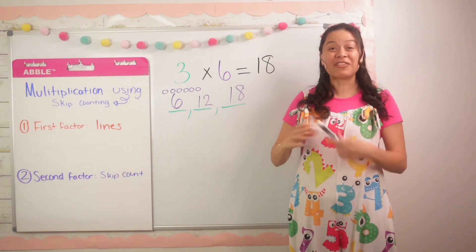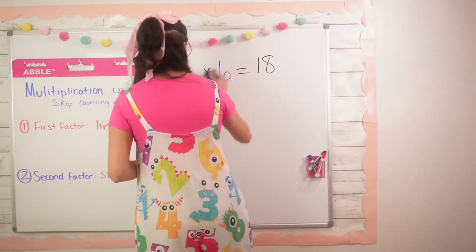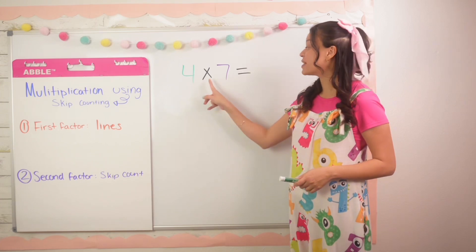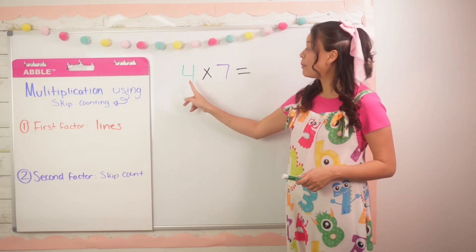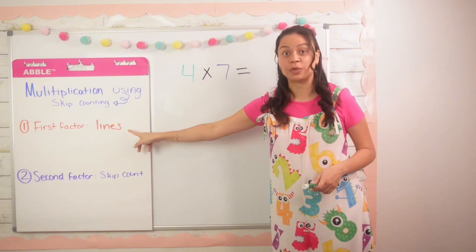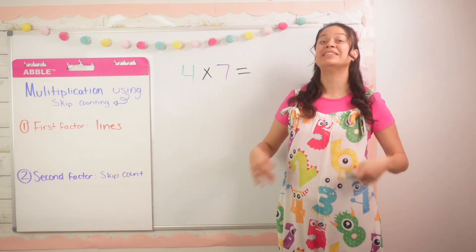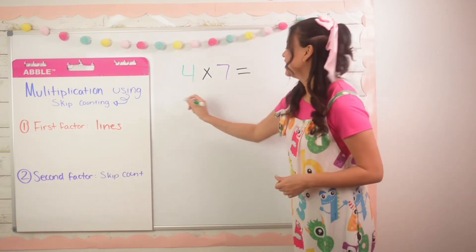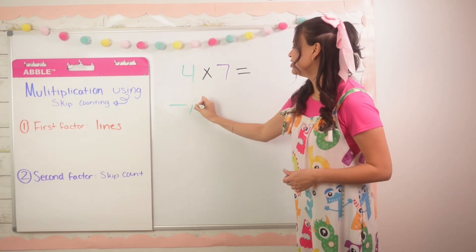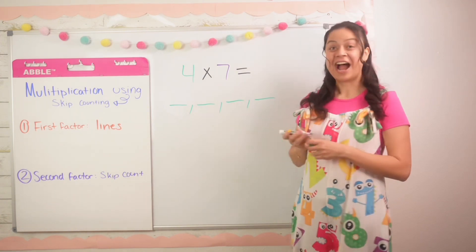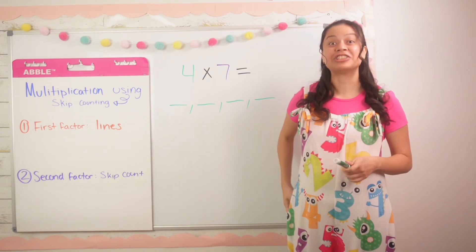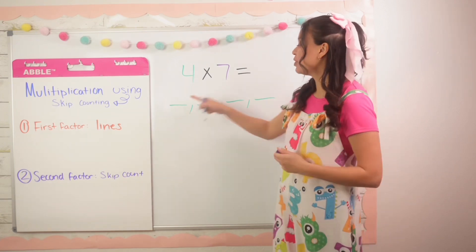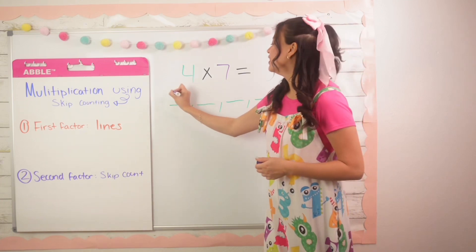Alright besties, are you ready for example number two? Let's go! For example number two we have four times seven. The first factor tells us how many lines we're going to draw — how many times we're going to skip count. So four times means four lines: one, two, three, four. And the second factor tells us what we're going to be skip counting by — in this case, seven. So I'm going to write seven on my first line.